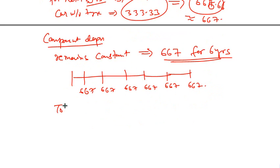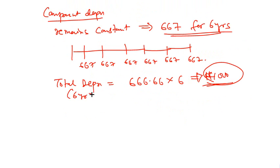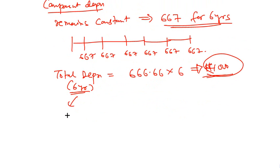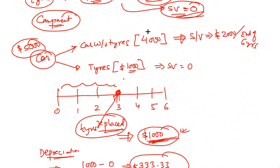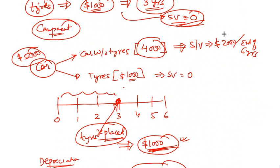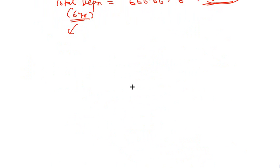Total depreciation over six years = $666.67 × 6 = $4,000. This breaks down as: $2,000 depreciation for car without tires (cost $4,000 minus salvage $2,000), plus $1,000 depreciation for the first set of tires, and another $1,000 for the second set of tires over the next three years.